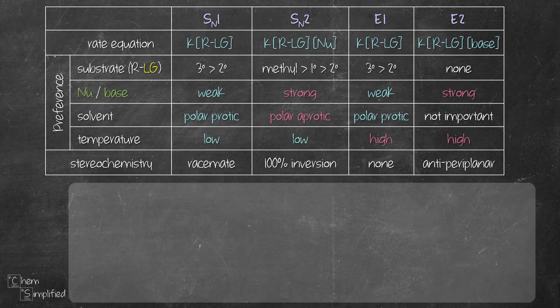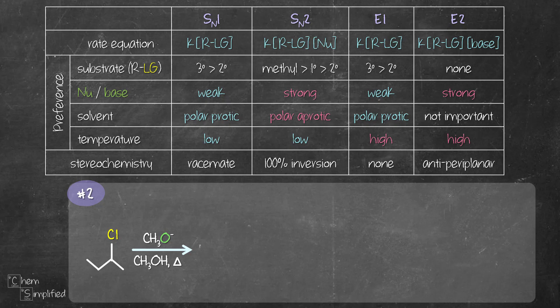Let's try another example. We have methoxide in methanol added to 2-chlorobutane at high temperature. Which mechanism will dominate? 2-chlorobutane is a secondary alkyl halide. This doesn't rule out any mechanism because it's possible for all four mechanisms.